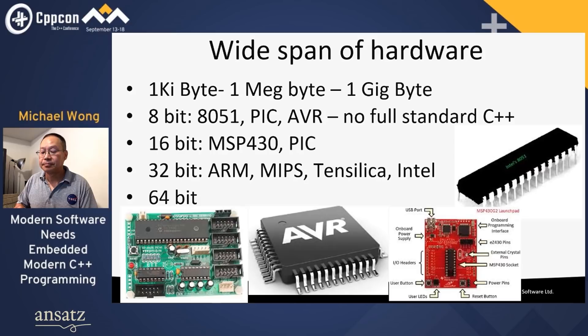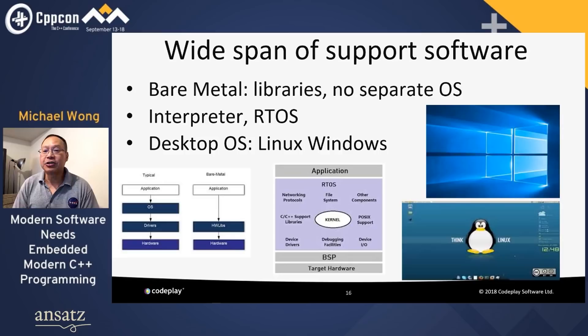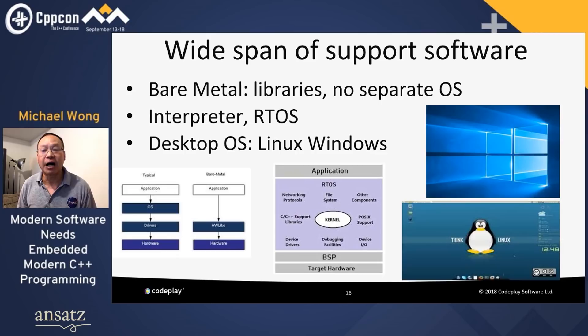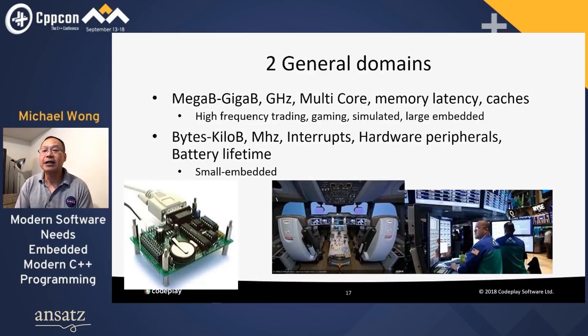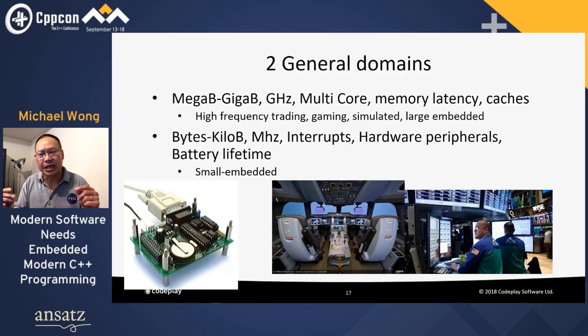They definitely span a wide range of supported software, from bare-metal with just a library and no OS, to interpreters with a real-time operating system, to desktop OSes like Linux or Windows. I separate them into two general domains: the megabytes/gigahertz/multicore systems with memory latency caches, good for high-frequency trading, gaming, simulations, and large embedded systems; and the small bytes/kilohertz systems running at megahertz with interrupts and hardware peripherals where battery lifetime is an issue.